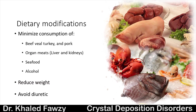Dietary modification is easy and important. Avoid eating a lot of meat — veal, turkey, pork, lamb, liver and kidney, and seafood. Avoid alcohol, reduce weight, and avoid diuretics, especially those that induce hyperuricemia.